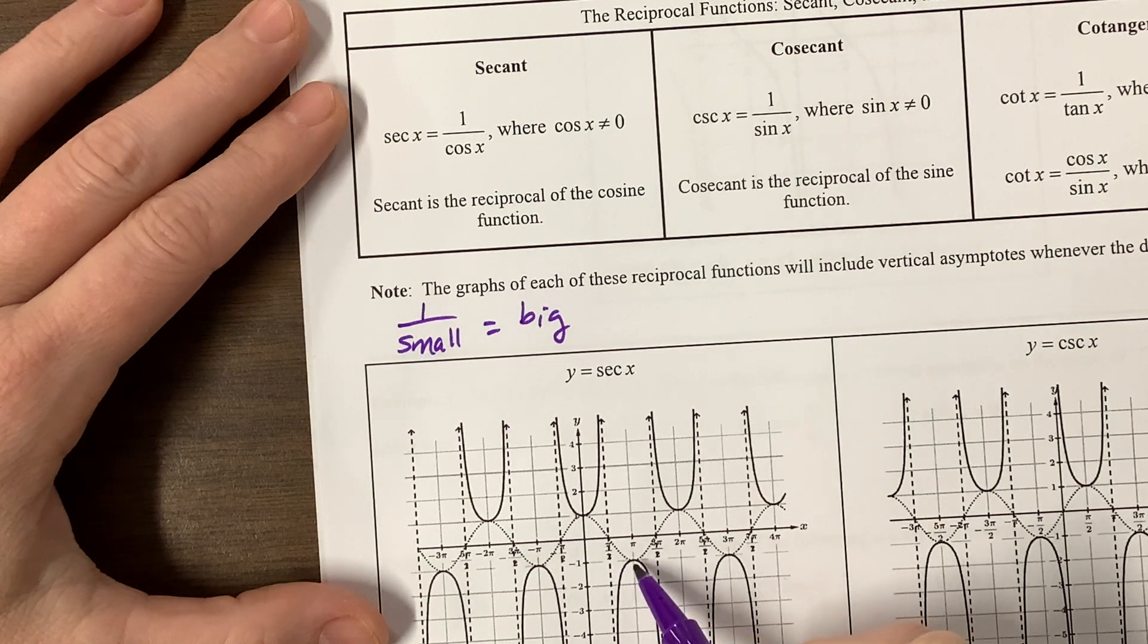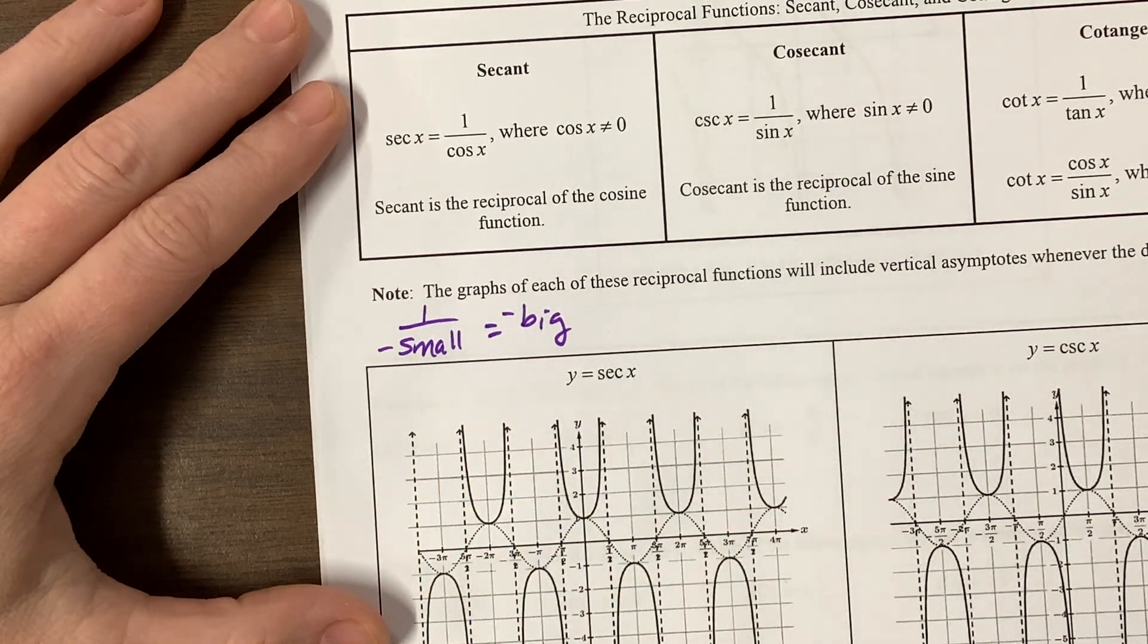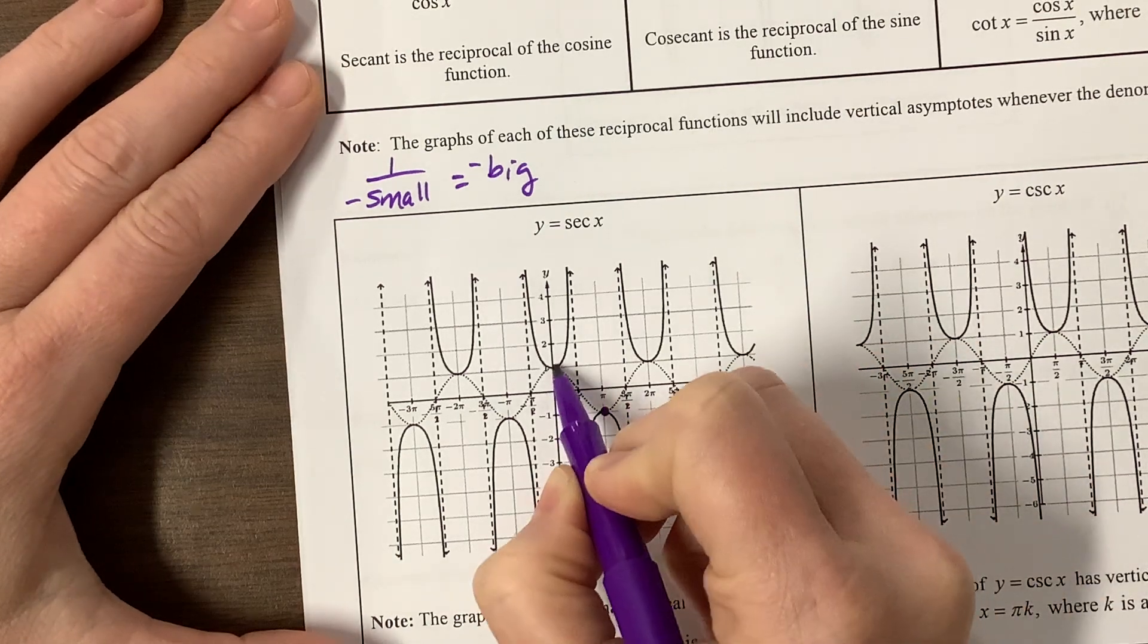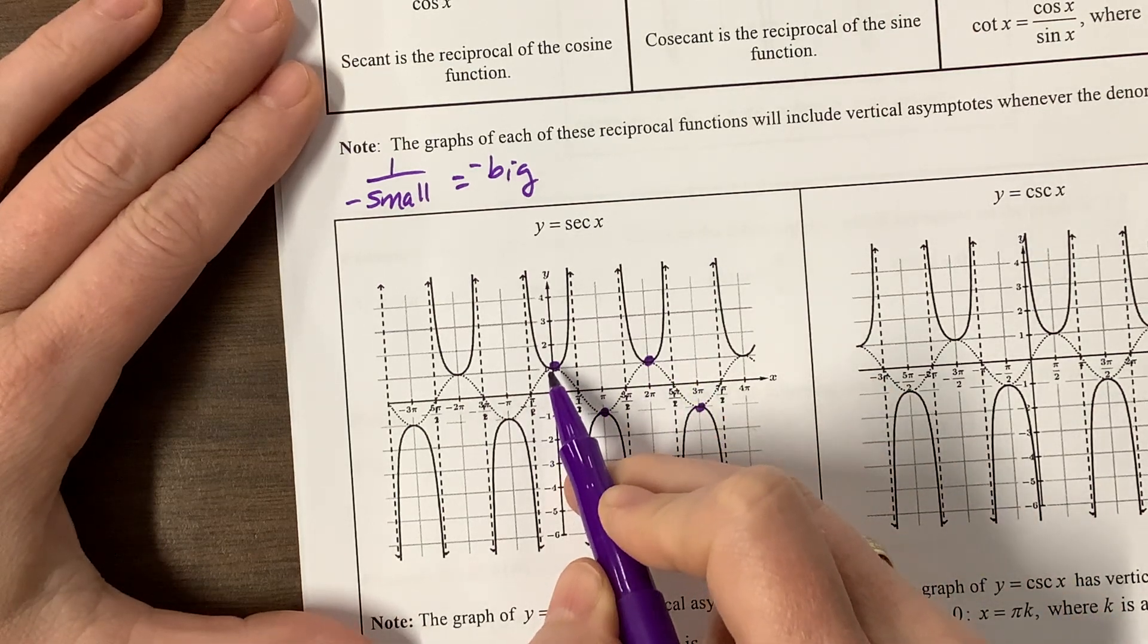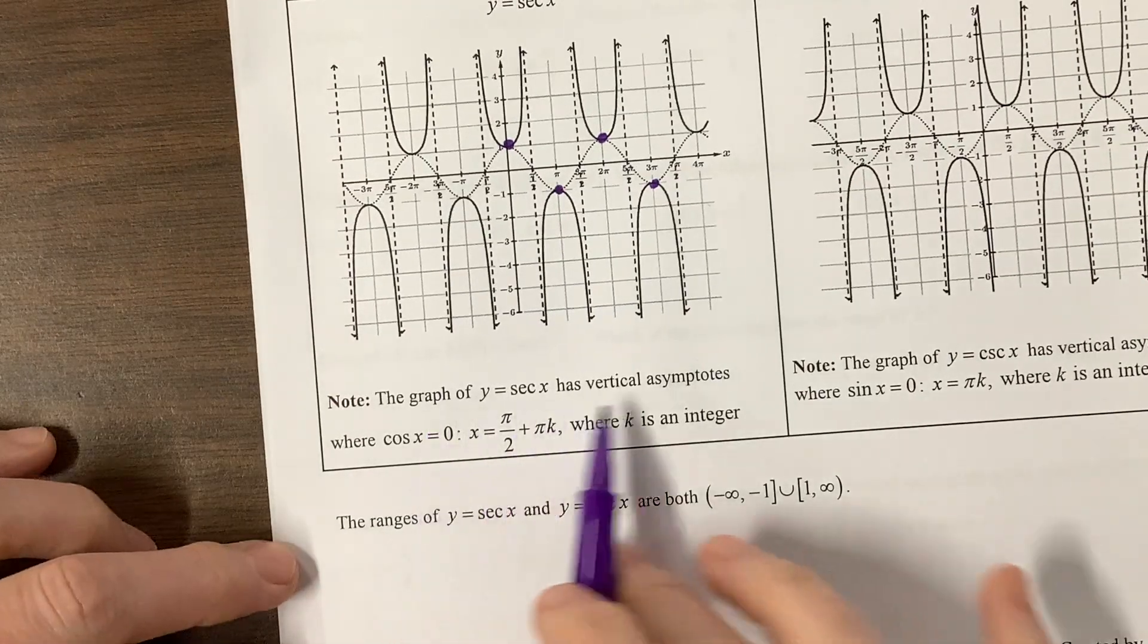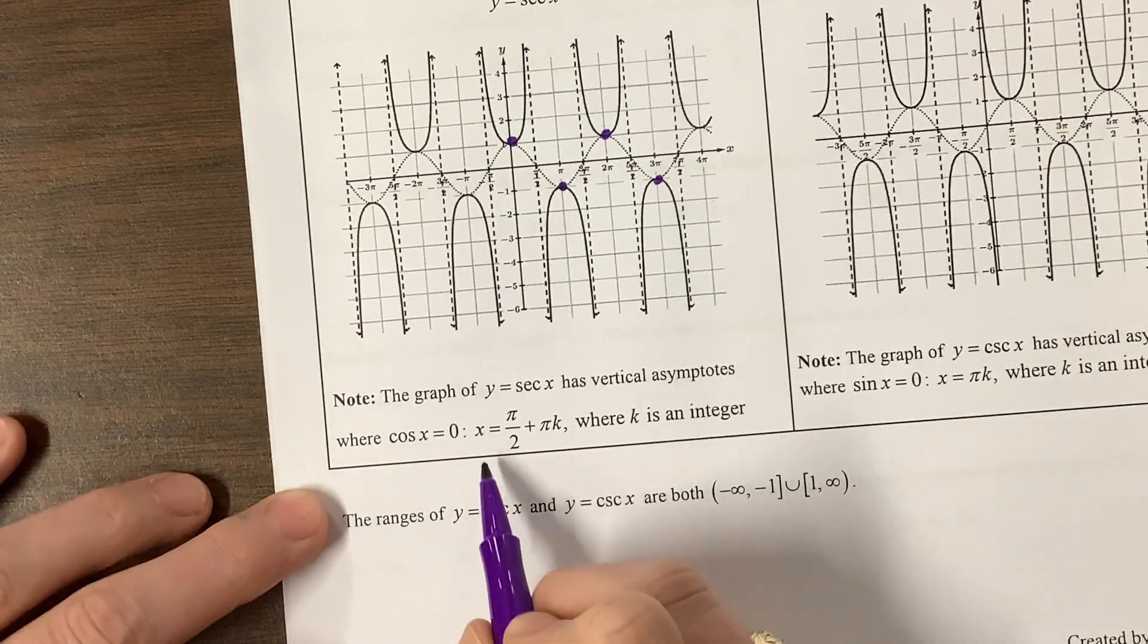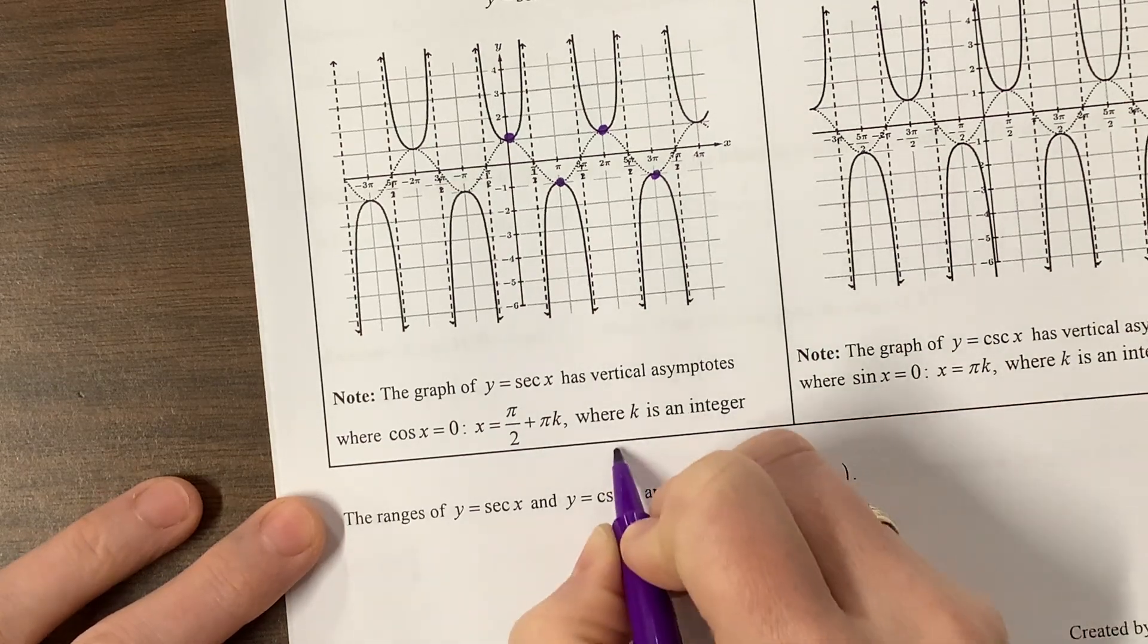The same thing happens over here. We're getting closer and closer to 0, but in the negative direction. So something really small and negative ends up being something really big and negative. Keep in mind these points: cosine has a maximum value when y is equal to 1, and the reciprocal 1 over 1 would still be 1, so it has those points in common.